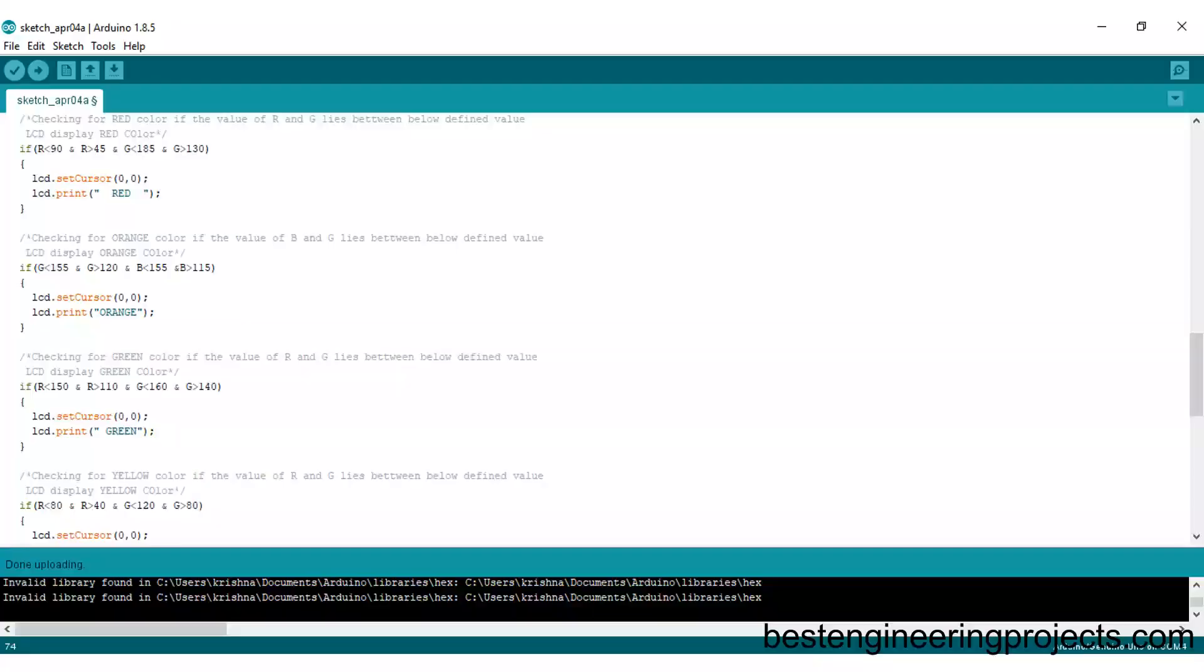It's time to update the code with your measured values. For that, scroll down below. There you can see different if sections. Here each if section represents each color.